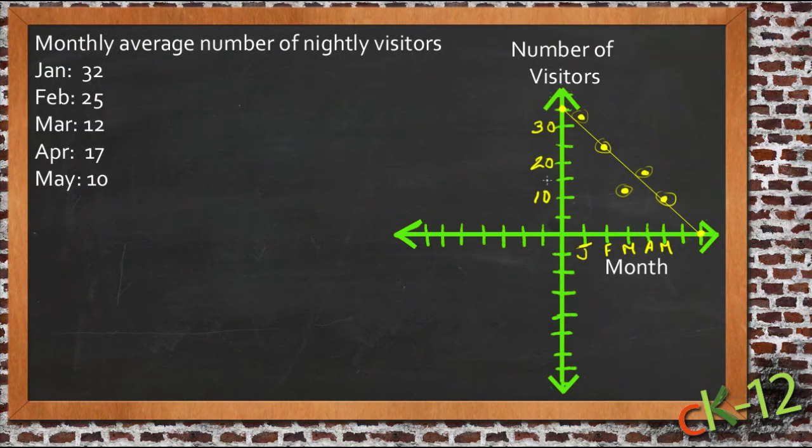So now what we're going to do is use this information to predict what might happen in the future. We only have data through May, so what we want to do is see what might happen if we were to continue this data on out through June or July based on the average of what's happened so far.